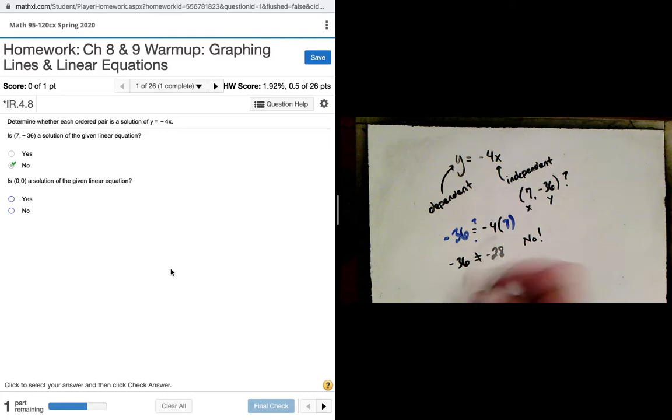Is 0, 0 a solution? It appears so. I would get 0 on the left-hand side is equal to negative 4 times 0. And this, in fact, is true. 0 equals 0. Yes. 0, 0 is a solution to this equation.